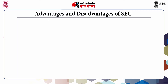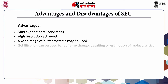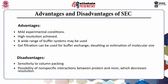Gel filtration chromatography is also known as molecular sieve chromatography or gel permeation chromatography. Its advantages include: separation carried out under very mild conditions, high resolution, and compatibility with many solvents so a wide range of buffer systems can be used. It can also be used for buffer exchange, desalting, or to obtain an estimate of molecular size. Disadvantages include sensitivity to column packing — the packing must be done ensuring no cracks or air bubbles are trapped — and non-specific interactions between the protein and resin can decrease resolution.